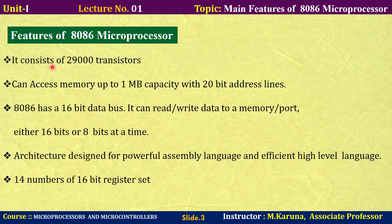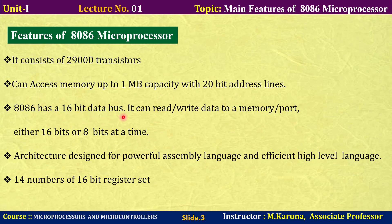The microprocessor is developed with 29,000 transistors and can access memory up to 1 megabyte capacity with 20-bit address lines. Memory capacity can be determined by the address lines. The processor also consists of a 16-bit data bus.